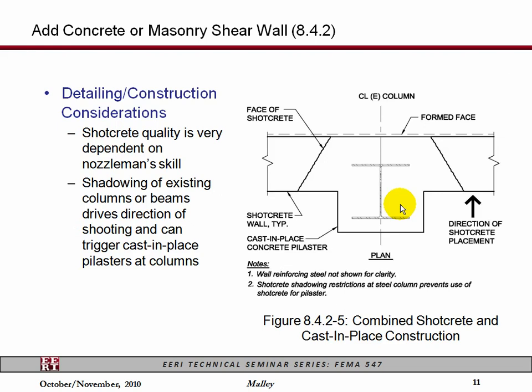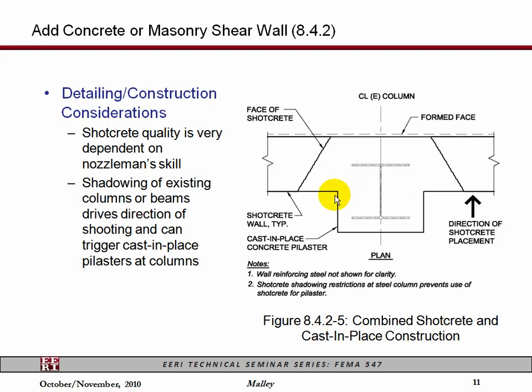Another piece to consider: if we're going to do one of these new concrete walls and the column is passing by on either side, there's some guidance on how to do the starting and stopping of the shotcrete piece versus a cast-in-place piece, because you won't be able to get on the back side of the entire steel column to get the shotcrete in all the way. In that case you need to combine the shotcrete with a cast-in-place pilaster around the steel column.